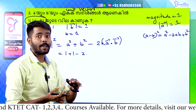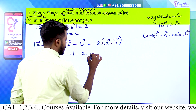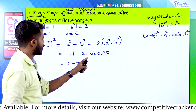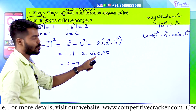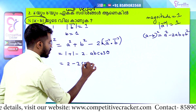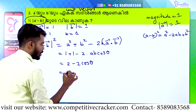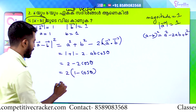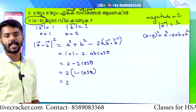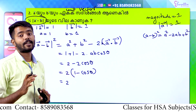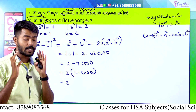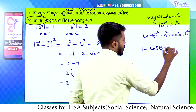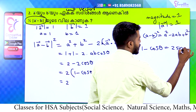Vector A dot vector B equals AB cos theta. Since A equals B equals 1, AB equals 1. So we get 1 plus 1 minus 2 into cos theta, which equals 2 minus 2 cos theta, which equals 2 into 1 minus cos theta.